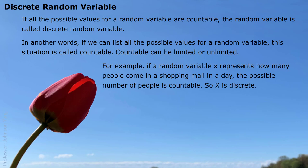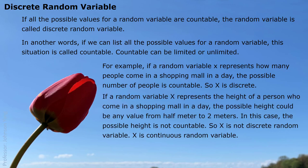If a random variable x represents how many people come into the shopping mall in a day, the possible number of people is countable, so random variable x is discrete. But if a random variable x represents the height of a person who comes into the shopping mall, the possible height could be any value, probably from 1.5m to 2m. In this case, the possible height is not countable — it may fill up an interval between 0.5m and 2m. If the possible values fill up an interval, the random variable is called continuous, so it is not discrete.